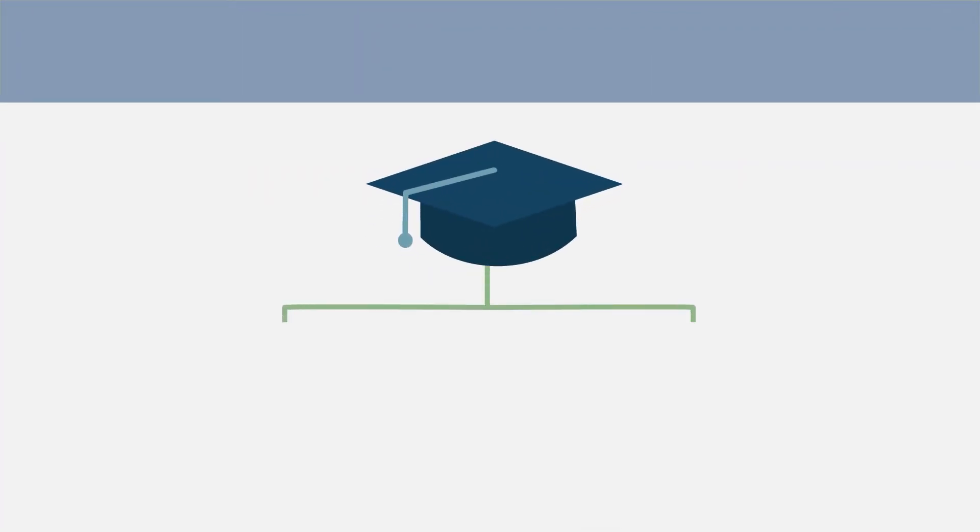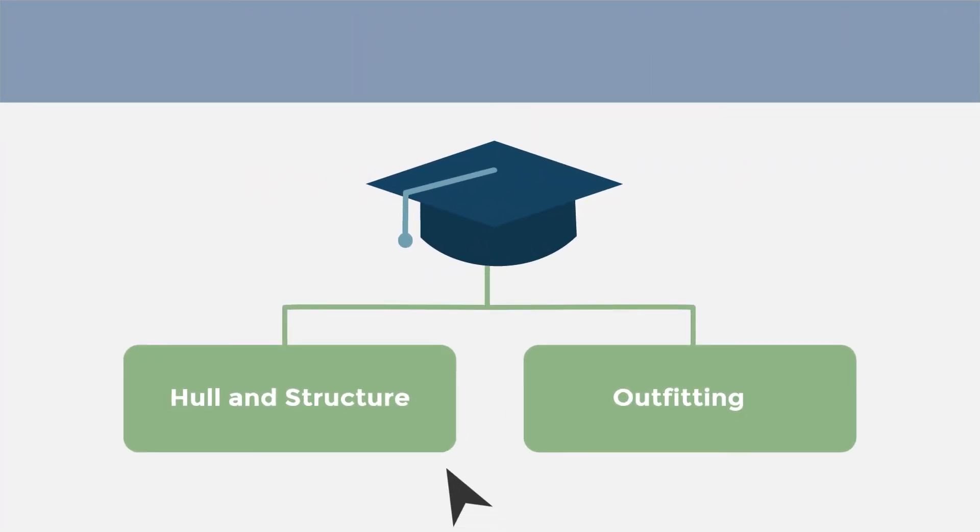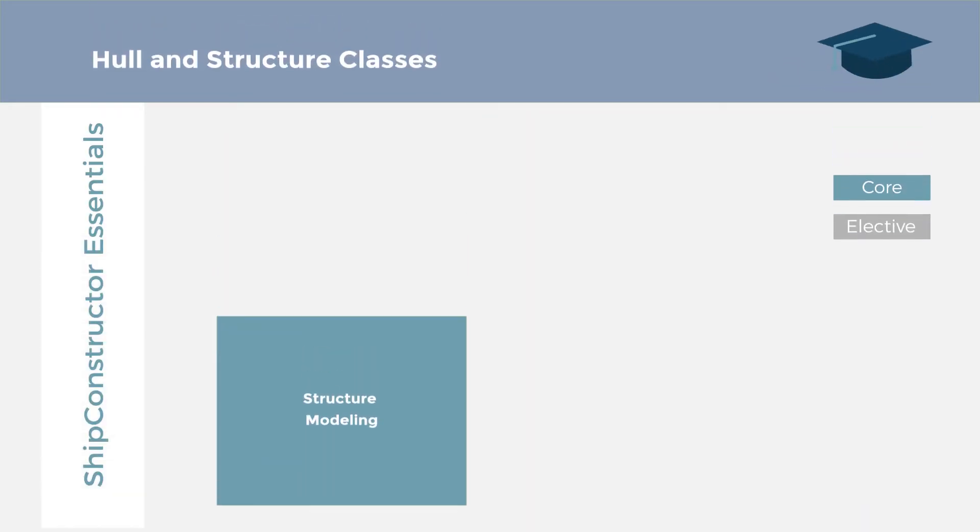There are two disciplines: hull and structure, and outfitting. There are core and elective classes for each discipline.